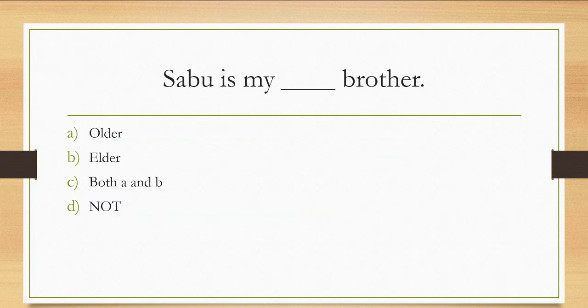Now here is a MCQ for you: 'Sabu is my ___ brother.' Options are: (A) older, (B) elder, (C) both, (D) none of these. The answer is in the comment section. I hope you have understood the rule of 'elder' and 'older'. Rule number 26 is coming next.